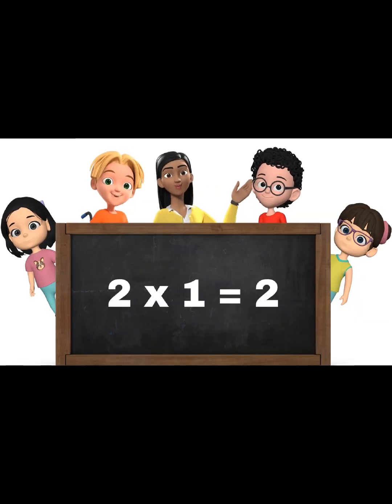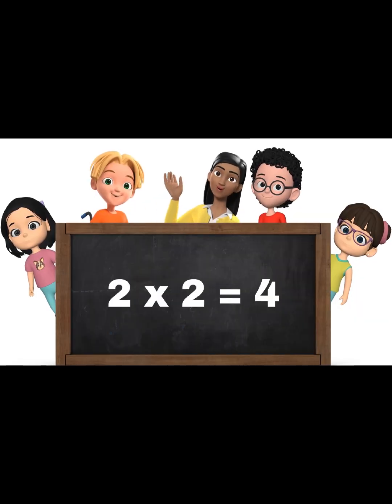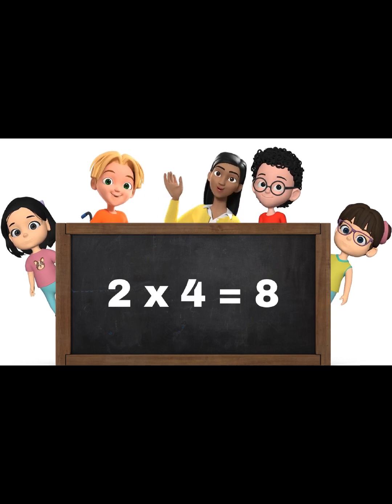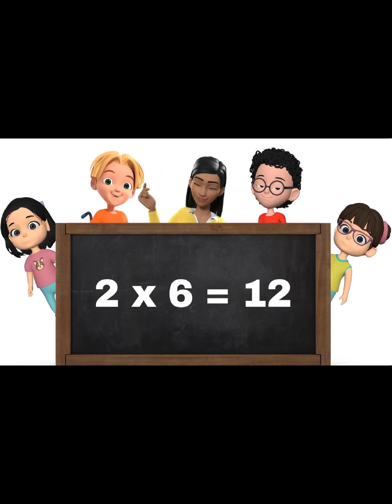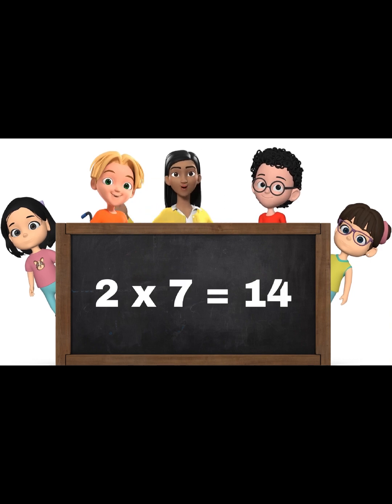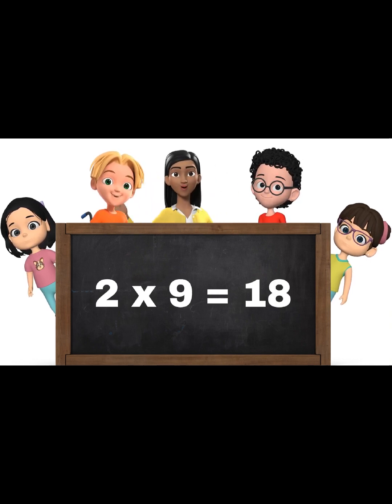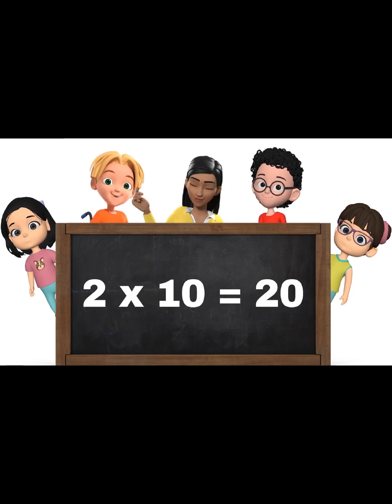Two ones are two, two twos are four, two threes are six, two fours are eight, two fives are ten, two sixes are twelve, two sevens are fourteen, two eights are sixteen, two nines are eighteen, two tens are twenty.